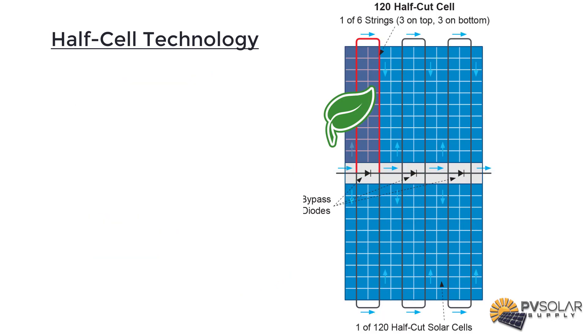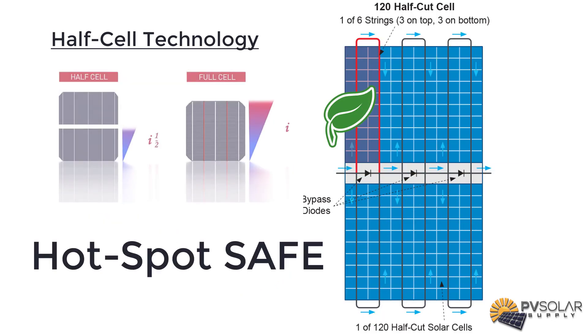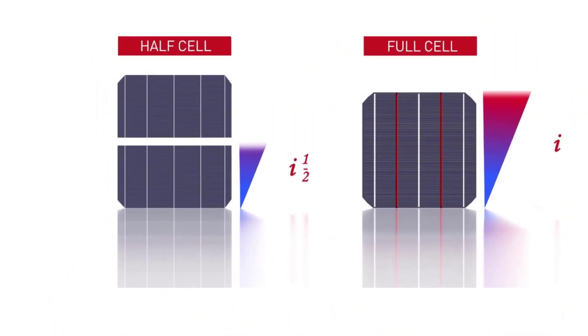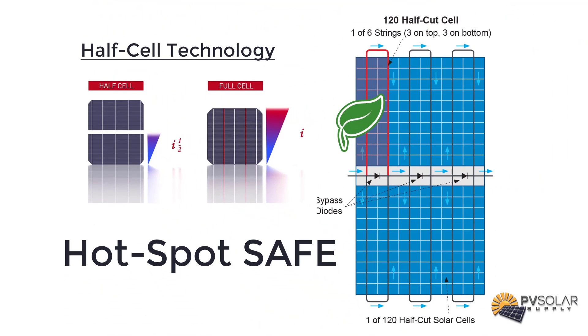The next advantage is the heat and hotspot reduction. With half cell technology, the heat production is much lesser. And shaded cells create no hotspots since the strings are much shorter and lesser voltage will be accumulated.